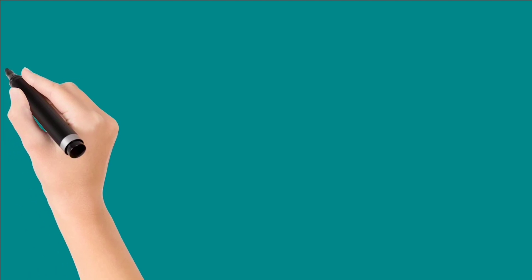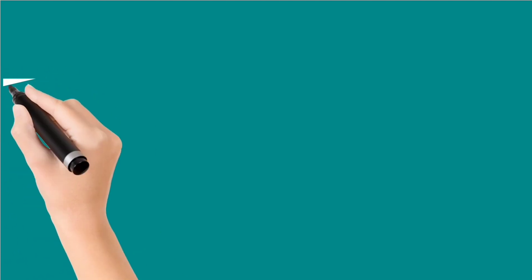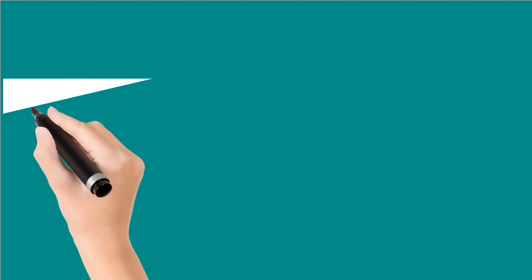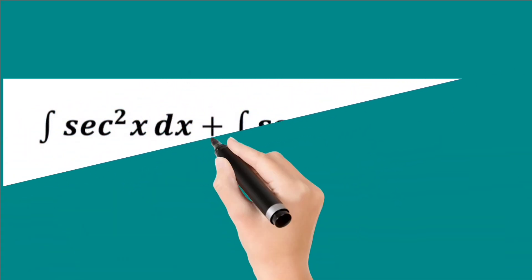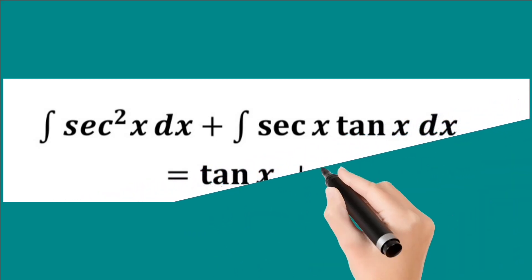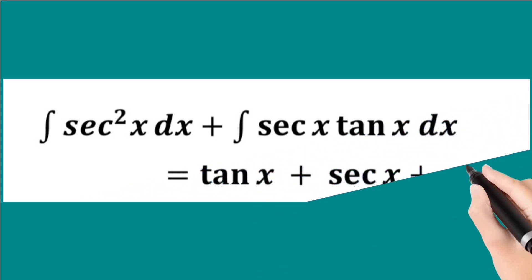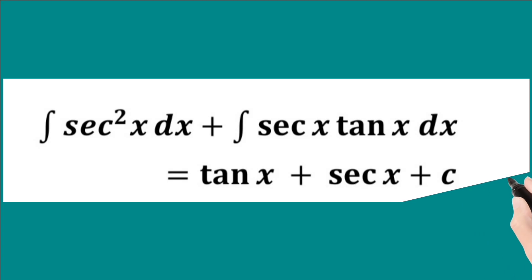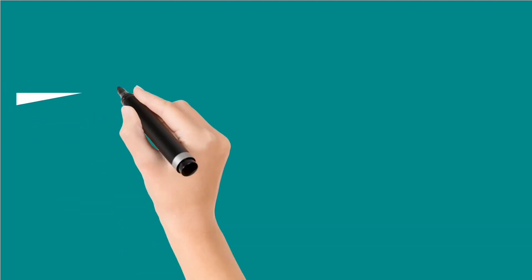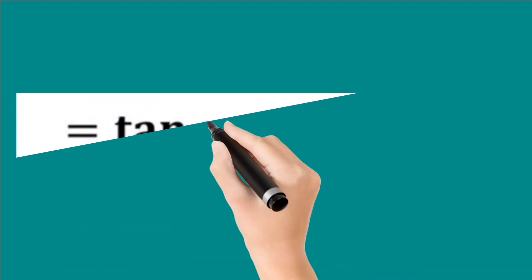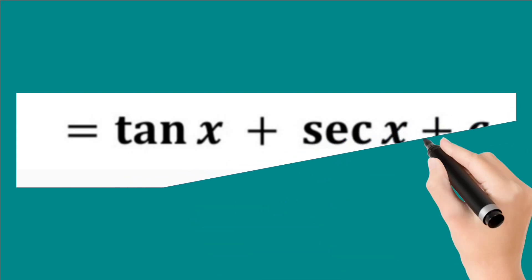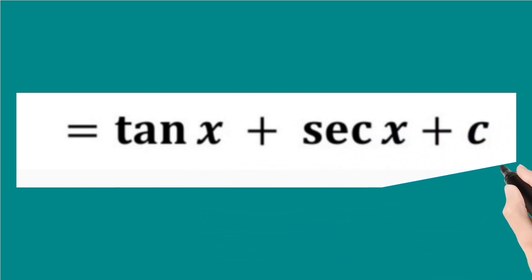The first integral on the right hand side, which is the integral of sec square x dx, is equal to tan x. The second integral on the right hand side is equal to sec x. So our result is equal to tan x plus sec x plus the constant of integration c.